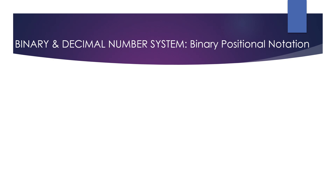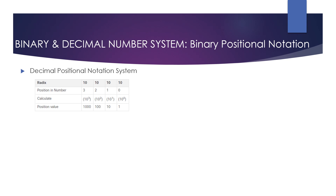Converting binary to decimal requires an understanding of positional notation. Positional notation means that digits represent different values depending on the position they occupy in the sequence of numbers. We know the most common number system is the decimal notation system. Looking at this table, we will describe each row — the first row gives us the radix, or number base.